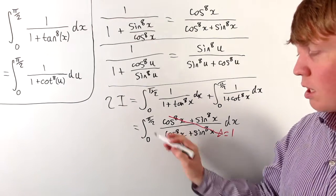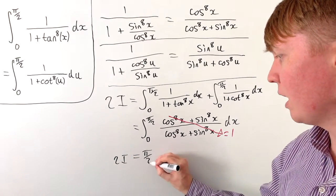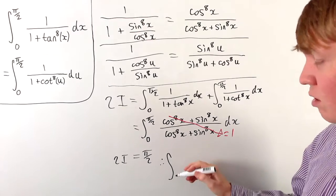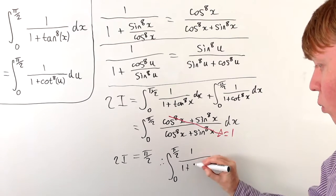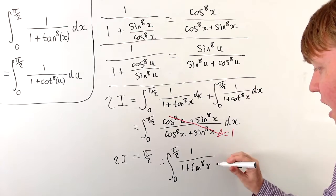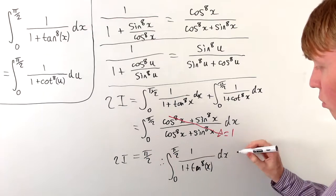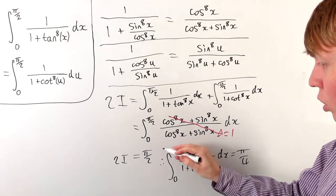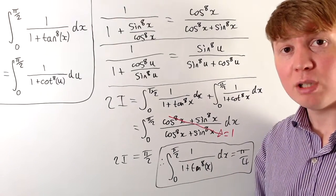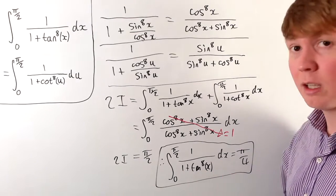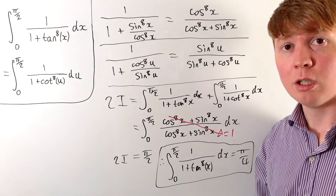So 2I = π/2, which means our original integral I = π/4. What's really interesting is that the power of 8 is completely irrelevant to the solution. We could raise tan to any real power — even 0 — and we would still get π/4 as our answer.